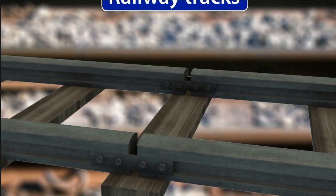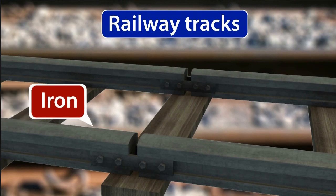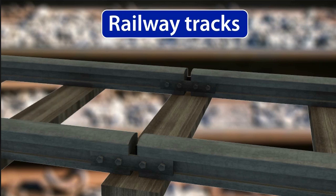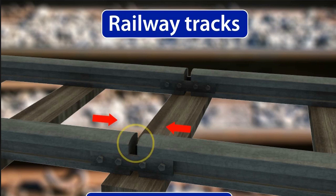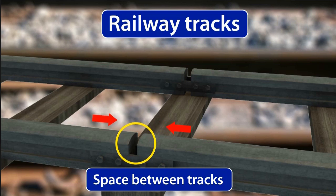Another example of expansion around us is railway tracks. The railway tracks over which trains run are made of iron. During summer, the iron expands, so space has to be left between two sections of the rail tracks to allow for this expansion. If this is not done, expansion of the tracks can cause them to bend, which can cause serious accidents.